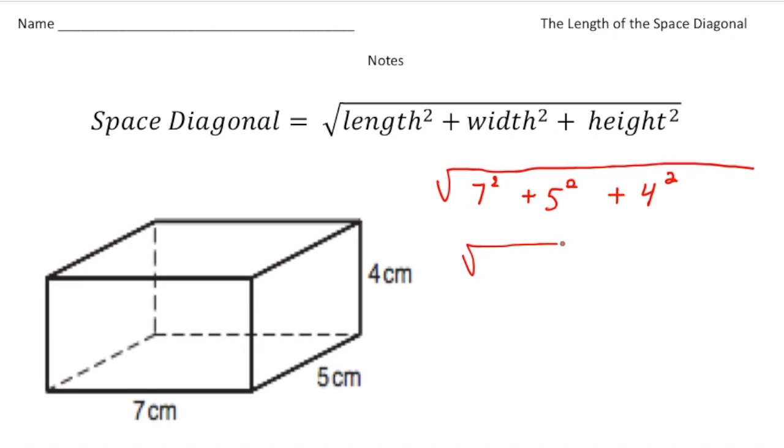And before we can take the square root, we need to square these numbers. So that's going to be 49, right, plus 25, plus 16. And then when I add 49, 25, and 16, I get 90. So the square root of 90 is actually our exact answer. But if I type that into a calculator and get the square root of 90, and if I round, I'd get a distance of 9.49 centimeters.